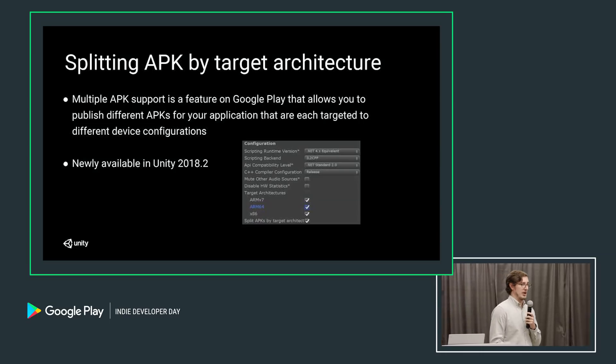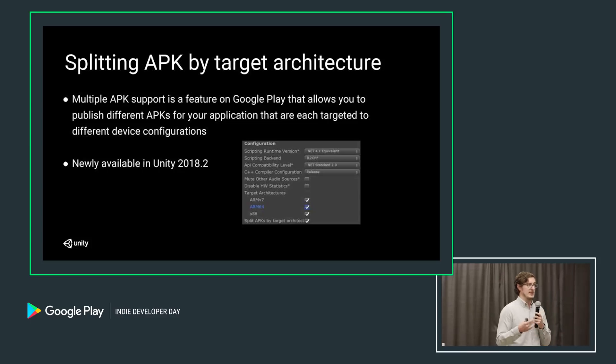The first is splitting the APK by target architecture. This is available in the latest version of Unity 2018.2, and it allows you to check which APK target architectures you specifically want when you build your app. The Play Store allows you to upload different versions of the APK for all these target architectures, and depending on the device, it will download the appropriate separate APK. Previously inside Unity, all architectures would be combined into a single APK, which ended up bloating the size — this is also a step toward compliance with things like the new Android P.